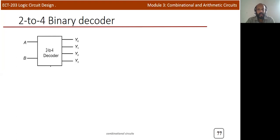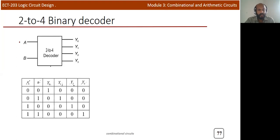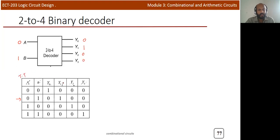The basic structure of a 2-to-4 binary decoder has inputs A and B, and outputs Y0, Y1, Y2, Y3 — different textbooks may use O0, O1, O2, O3. For the decoder output: if A and B are both 0 (input 0 0), then Y0 will be 1 and all other outputs will be 0. If the input is 0 1 (A=0, B=1), then Y1 will be 1 and all other values will be 0.